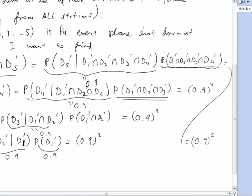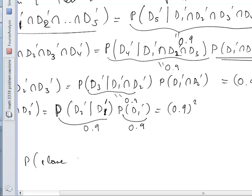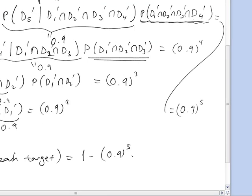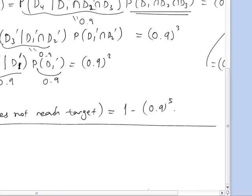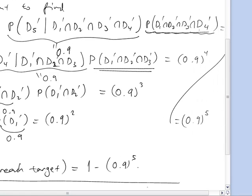So the probability that the plane does not make the target — because it's been shot while passing through one of the stations — is 1 minus 0.9 to the fifth power. You can leave it like that without further calculation. That takes care of problem number 7. The statement in the book is incorrect, but the book wanted to avoid these conditional probability calculations, which probably seemed more complicated to the author.